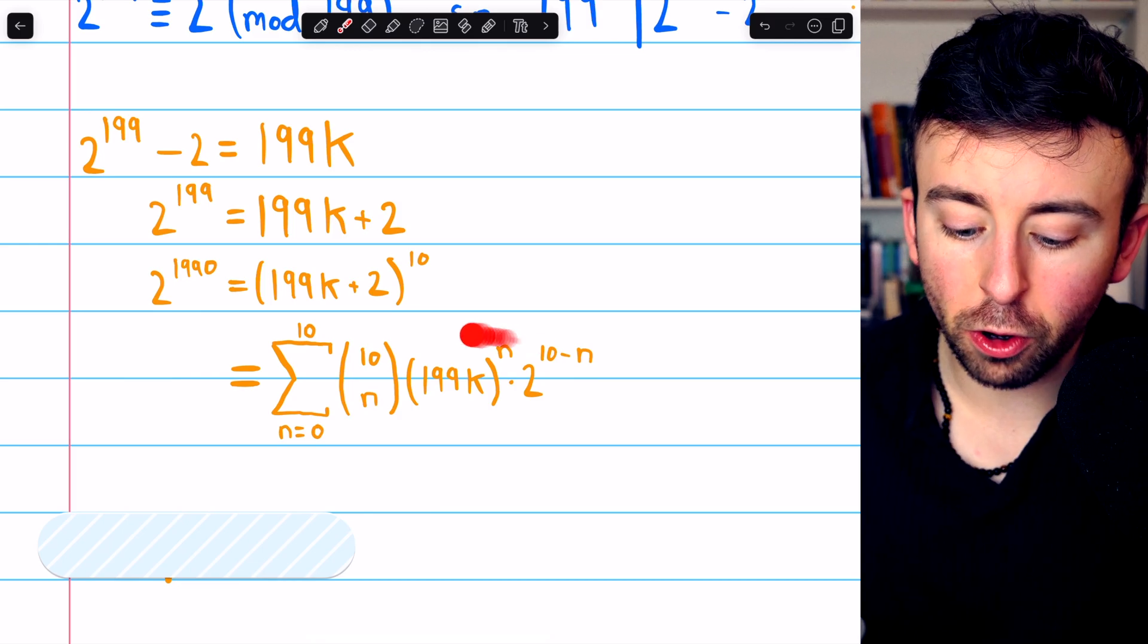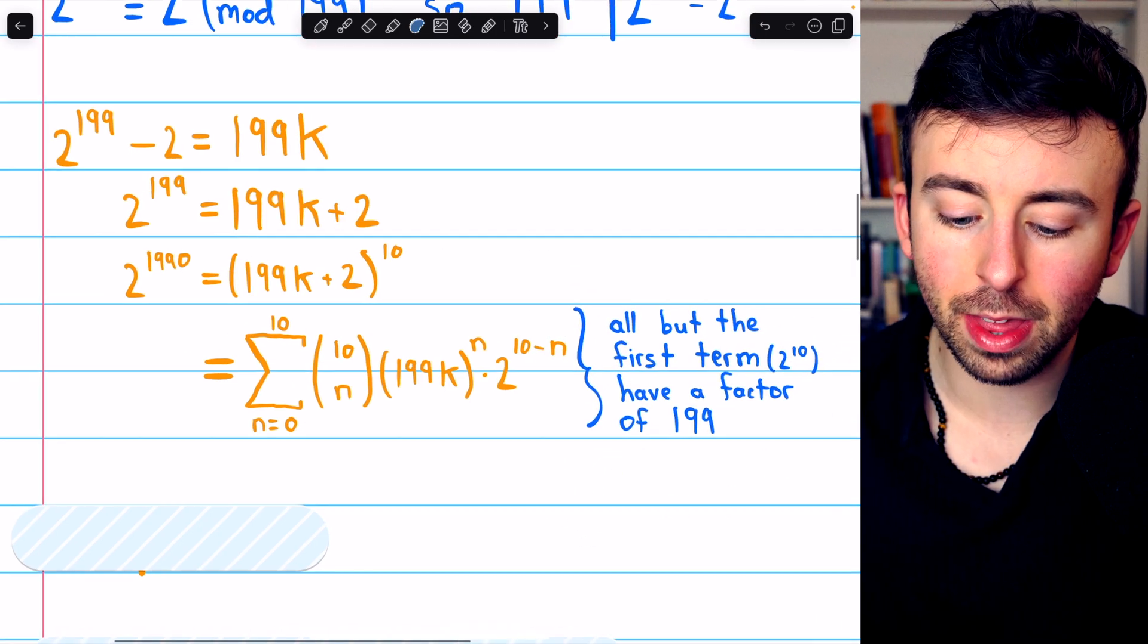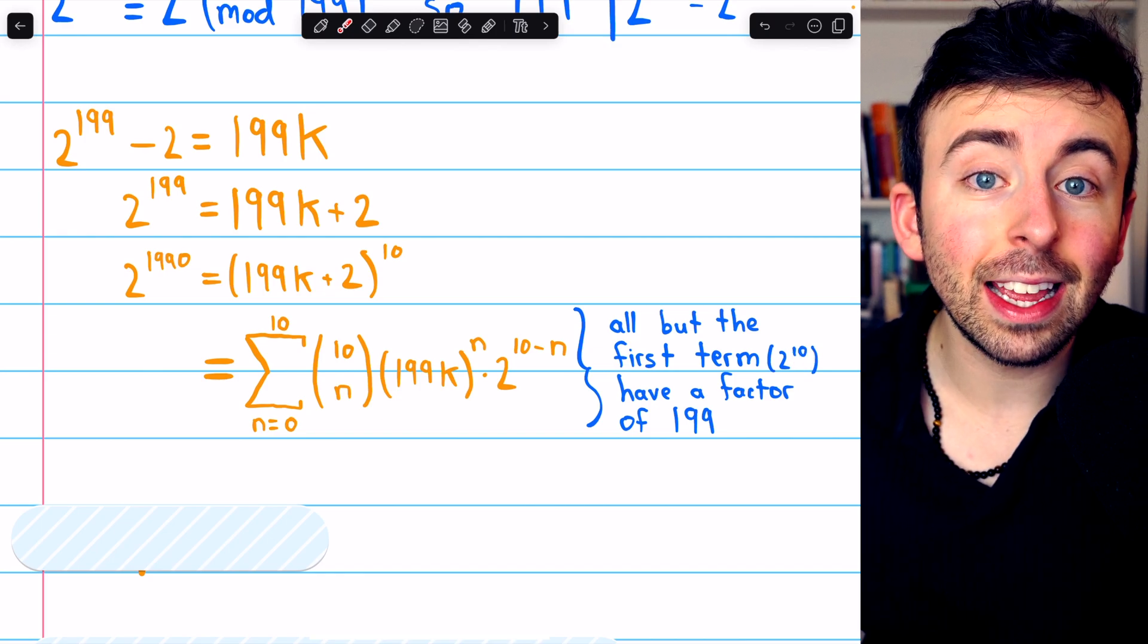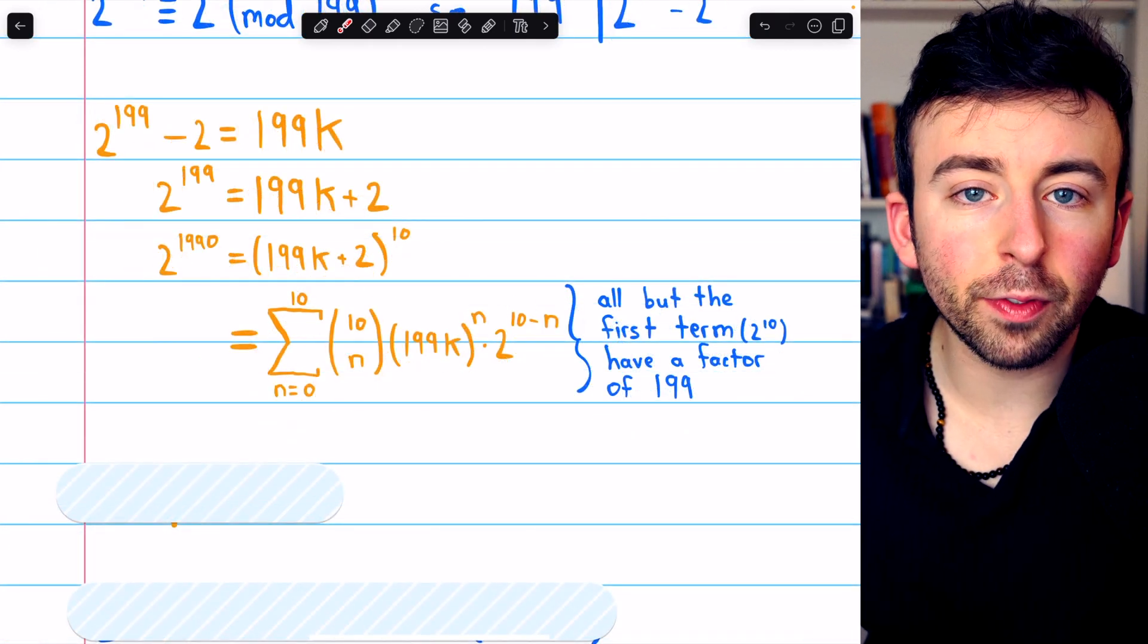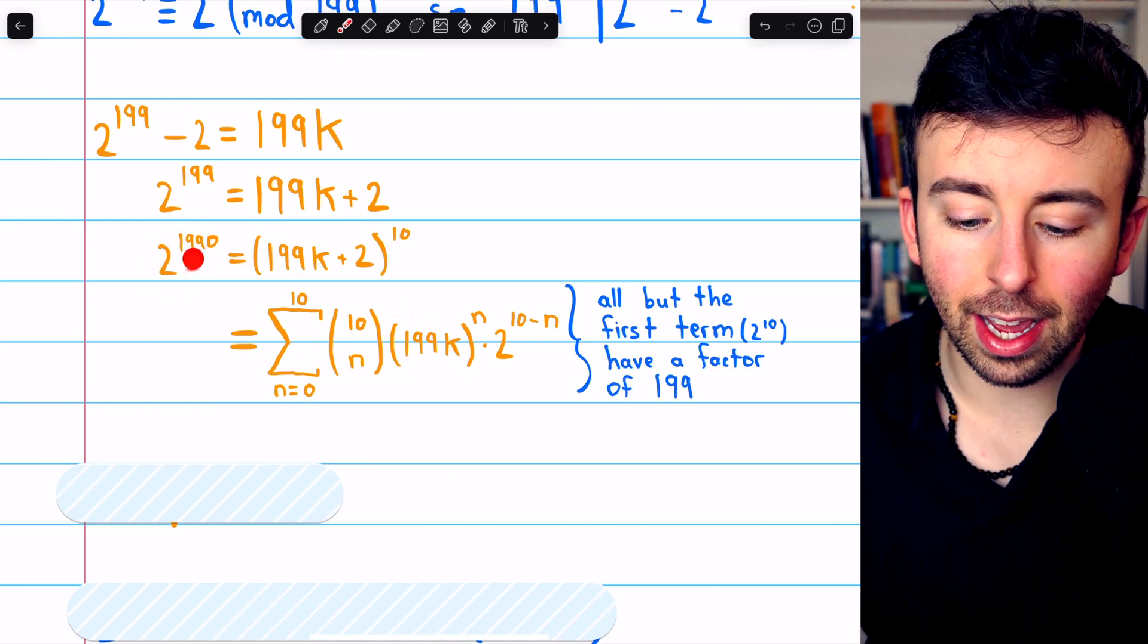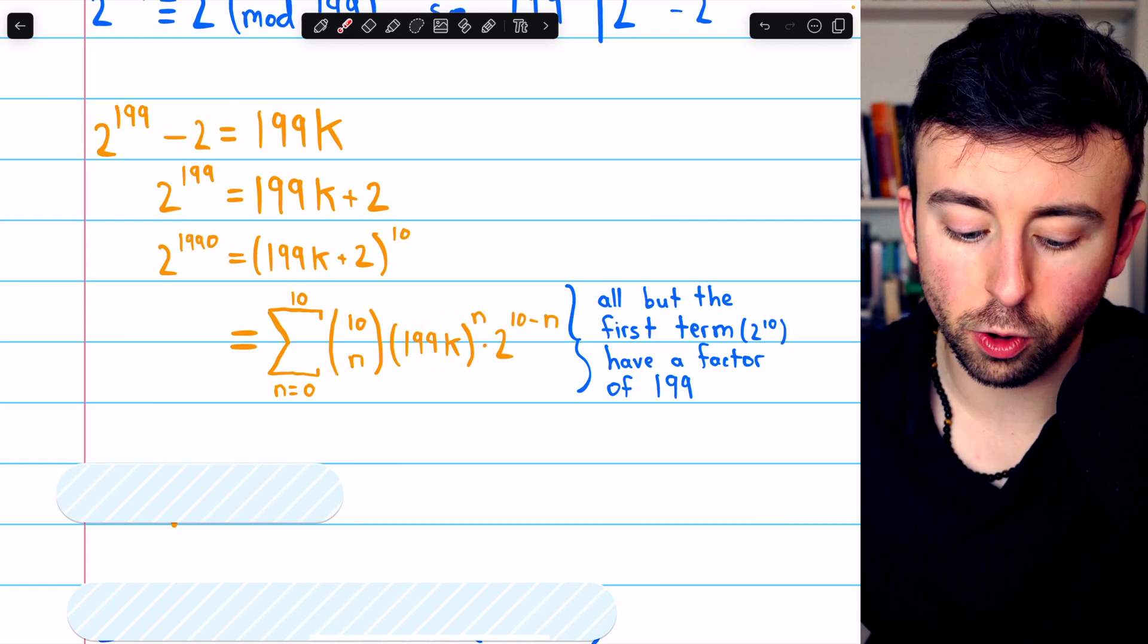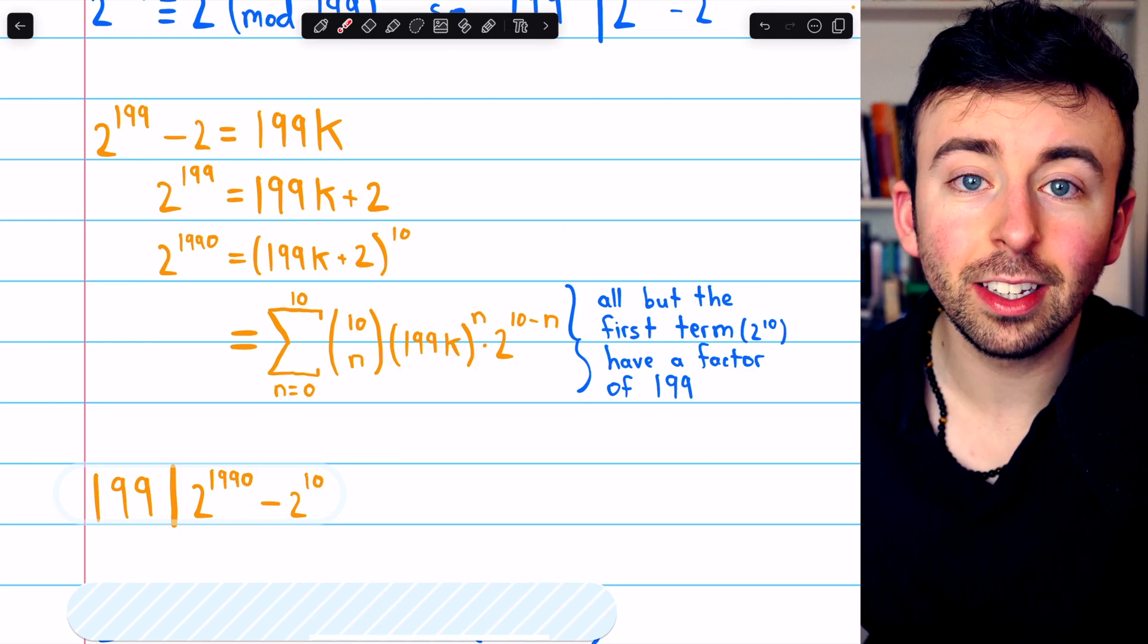So notice, every term in this sum after the first term where n equals 0, every term after that is going to have a factor of 199. When n equals 0, that first term is just 2 to the 10, but after that, every single term will have some factor of 199. So that means if we subtract that first term from both sides of this equation, on the left, we'll have 2 to the 1990 minus that first term, 2 to the 10, and on the right, we'll have all the other terms, which are just some multiple of 199. Thus, 199 must divide 2 to the 1990 minus 2 to the 10.